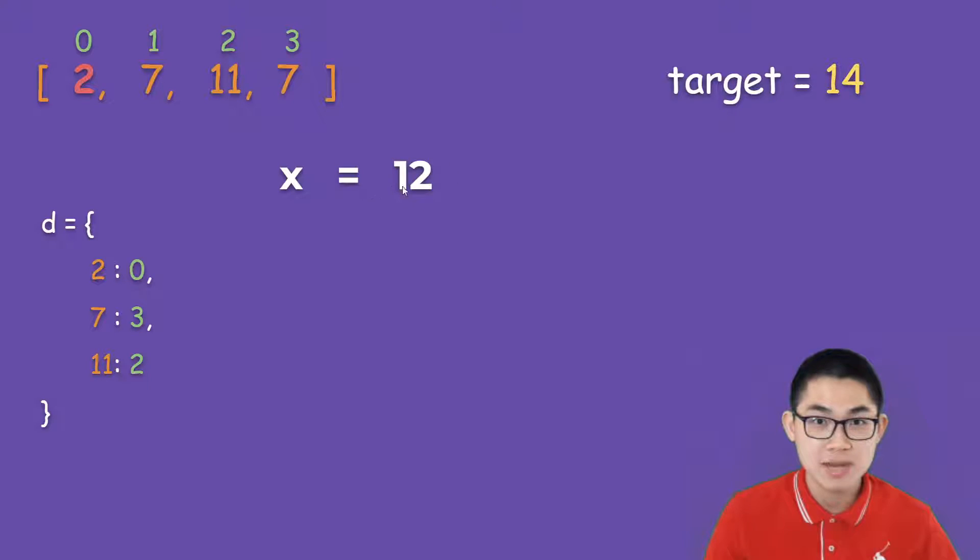And we can use this number 12 and we check inside the dictionary. Can we find number 12 in here? No, we have 2, 7, and 11. We don't have 12. So that means there is no number that adds to 2 and gives us 14.